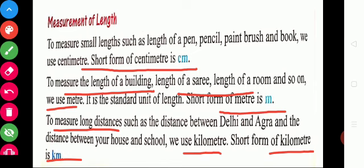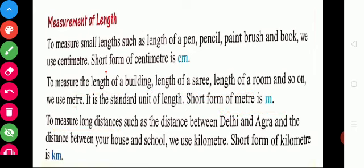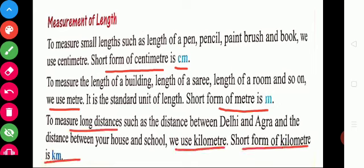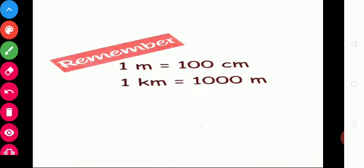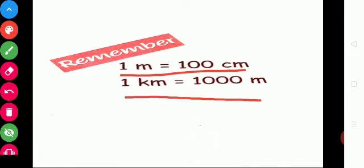Yes children, can you recall again? To measure small length is centimeter — short form cm. To measure bigger length we can use meter — short form m. To measure long distance we can use kilometer — short form km. Remember: 1 meter is equal to 100 centimeters, and 1 kilometer is equal to 1000 meters.